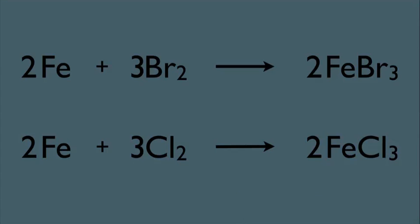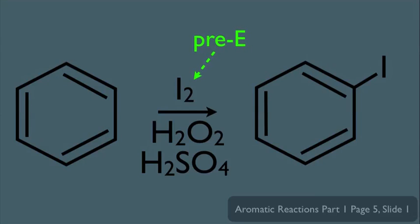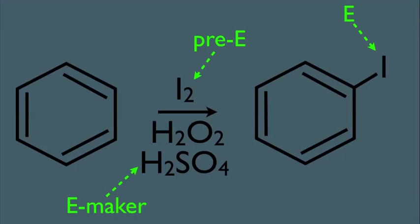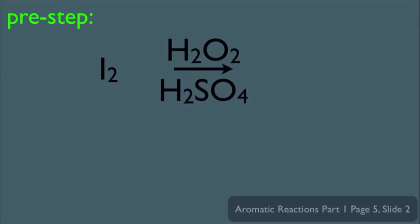However, there's one more halogenation reaction we should look at. This is how to add an iodine to your benzene ring. Notice the reagents are different here. In this case, I2 is your pre-electrophile, and these two things, water and H2SO4, are your electrophile makers. And of course, the iodine is the electrophile. With this being a little bit different, let's take a look at the pre-step for this reaction. Here we take the I2 and react it with the electrophile makers.